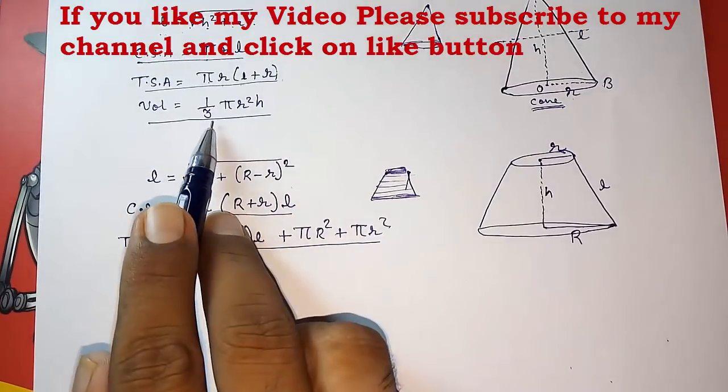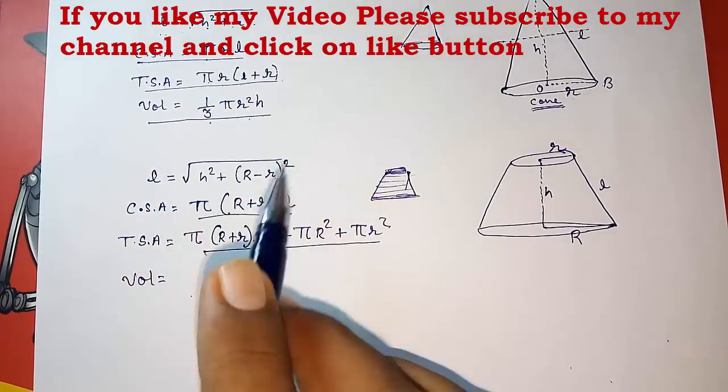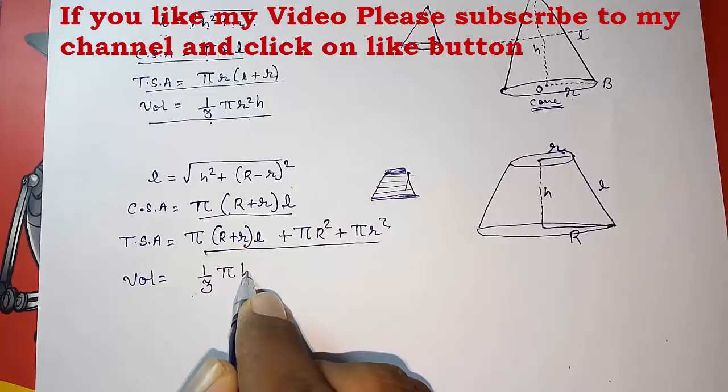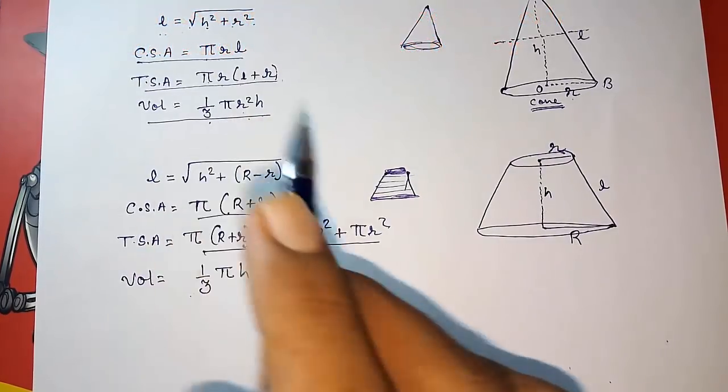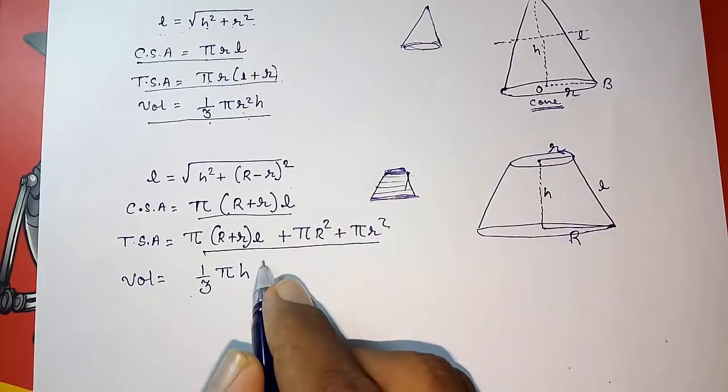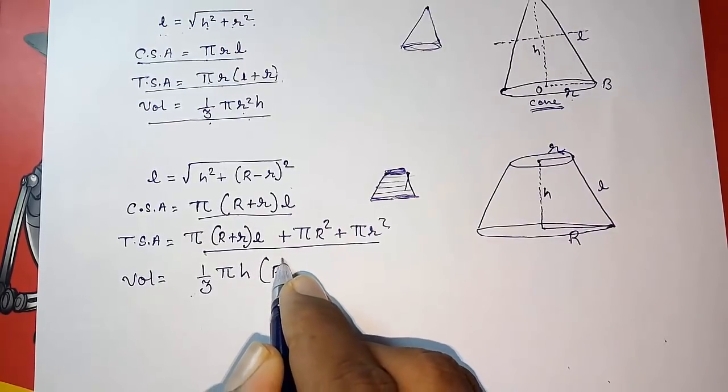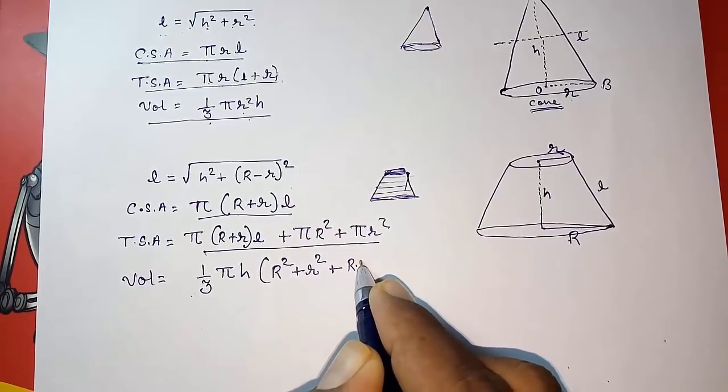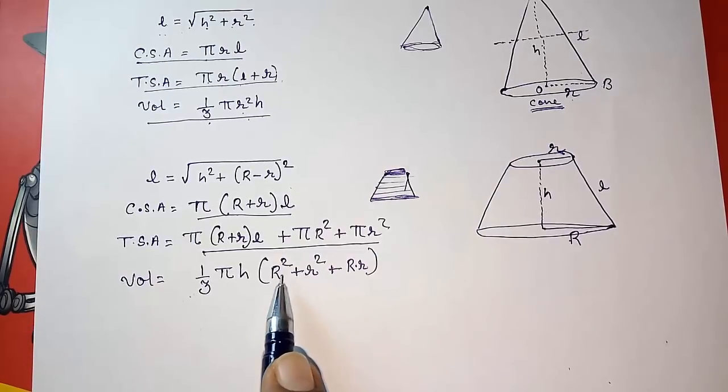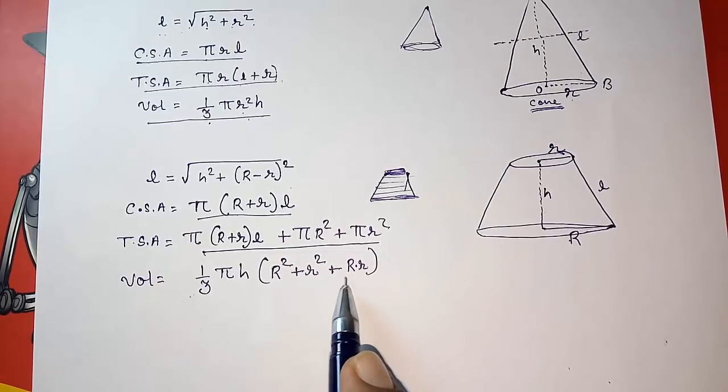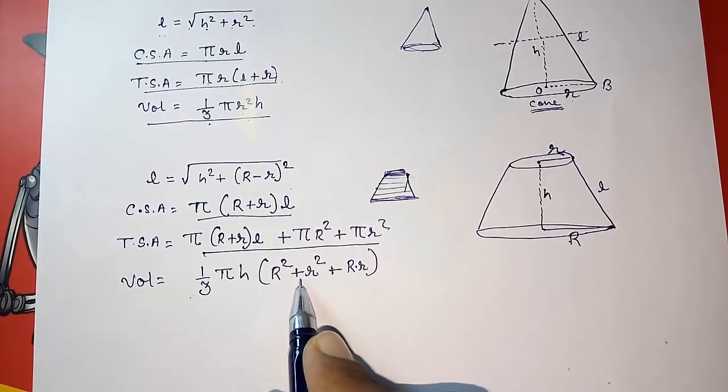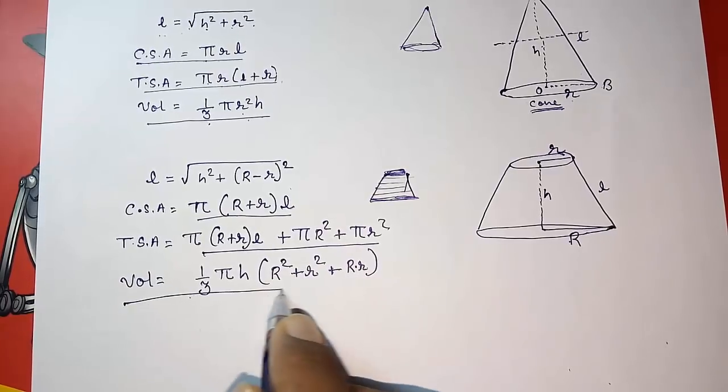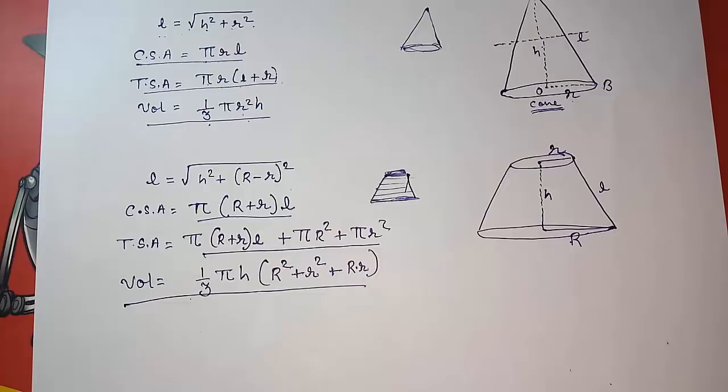Then for volume, what we were doing here: 1 by 3 pi r square h. So here also 1 by 3 pi will remain same, h will also remain same, but instead of r square, here we are having two r's. So here we have to take capital R square plus small r square, but we have to take one more - capital R multiply with small r also. General students are taking these two r, they forget to take this. So this is the formula for volume of frustum of cone.